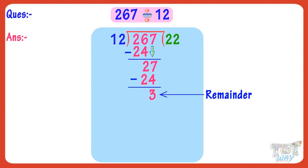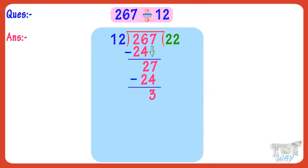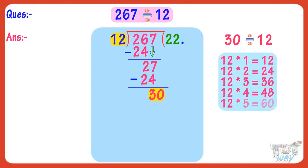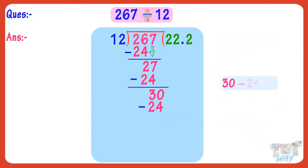But we have to find the answer up to 2 decimal places. So what we do here is put a decimal point to the right of the quotient and a 0 to the right of the number left, that is 3. Now we have to divide 30 by 12. The multiple of 12 nearest and smaller than 30 is 24. 12 multiplied by 2 is 24. So write 2 to the right of the quotient and 24 below 30, and subtract. On subtraction we get 6.